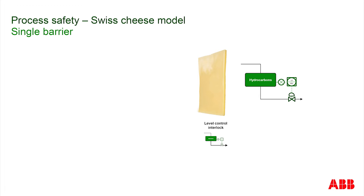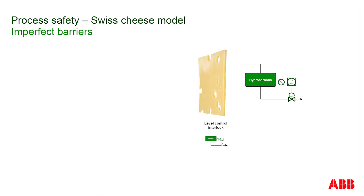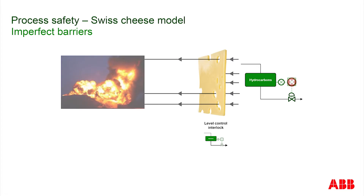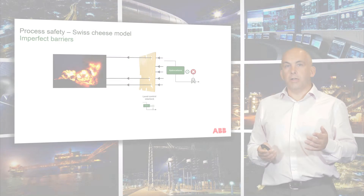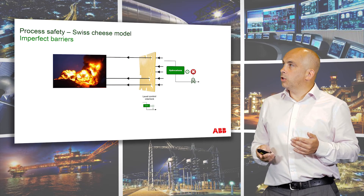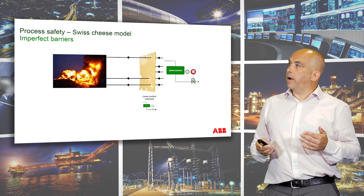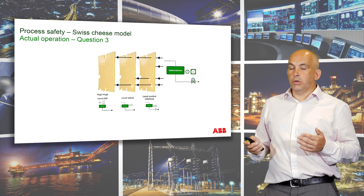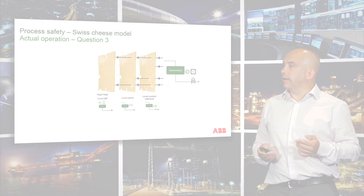Now when we have that failure on the level controller, we don't get the incident. Unfortunately, barriers aren't perfect. They've got holes in them, hence Swiss cheese. Now when we have the failure, we lead to the event. That's why we never rely on a single barrier. So we put in place multiple barriers and no single failure can lead to the event.